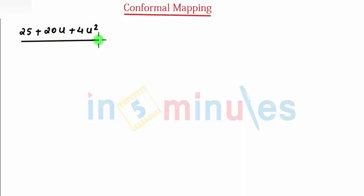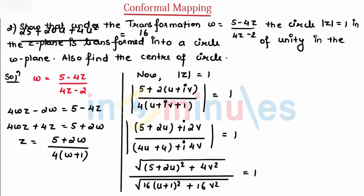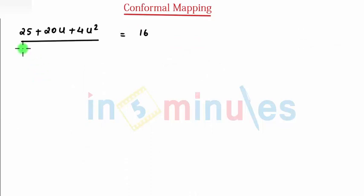This gets divided by, I can take 16 common which I can write on the right hand side. Here I can write u plus 1 the whole square which is u square plus 2u plus 1 plus v square.